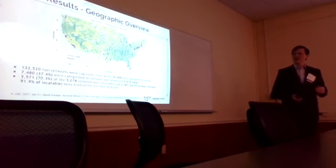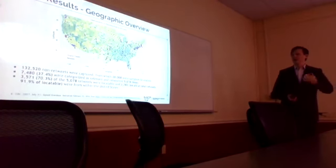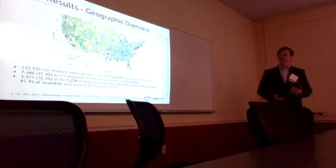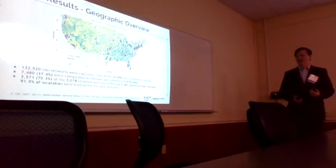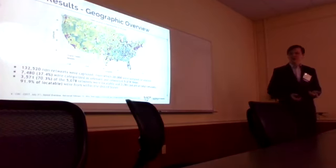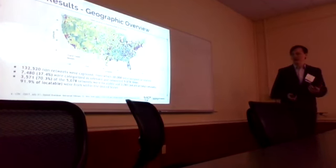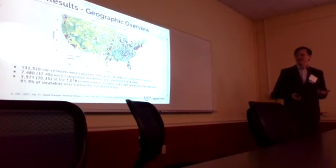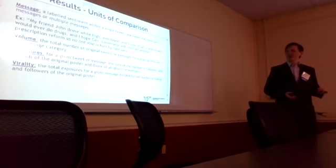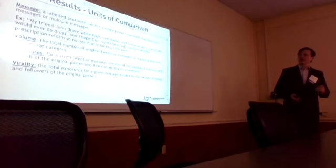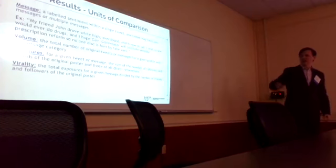We captured about 132,000 tweets, of which 20,000 were randomly sampled and scored manually. 7,480 of these were classified as relevant, and these were retweeted 5,078 times. Of those retweets, about 70% had a location, and about 64.6% of those had a location within the United States. We craft a couple units of comparison here: a message is a labeled sentiment within a single tweet, where one tweet could have no messages or many. This tweet contains all of them: 'My friend John drove while high, overdosed, is now in jail, I wish no one would do drugs, and I hope the governor will institute sensible prescription reform so no one else is hurt by fake Xanax.'